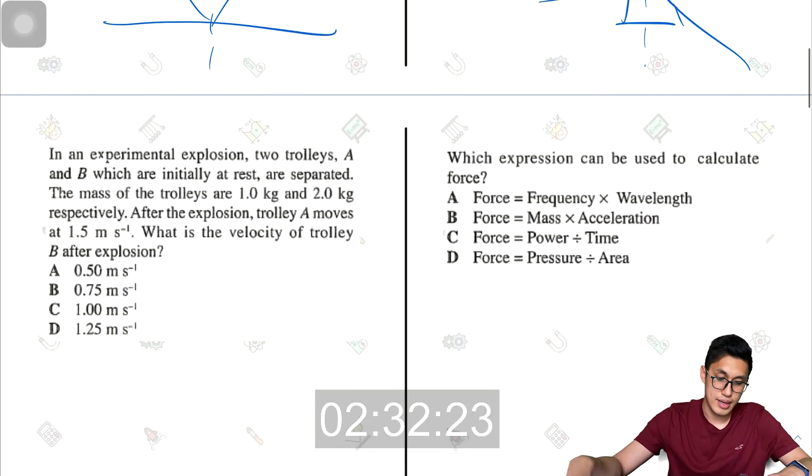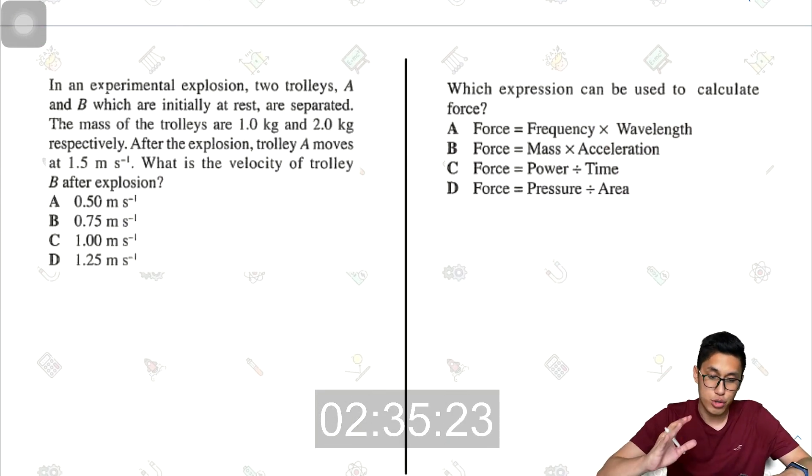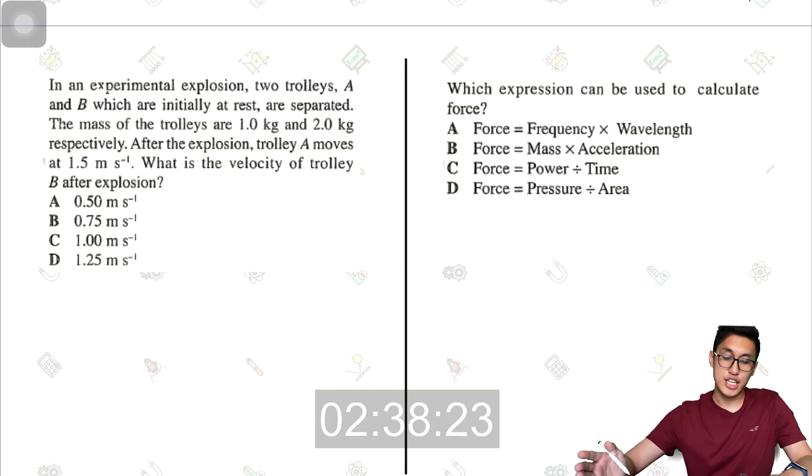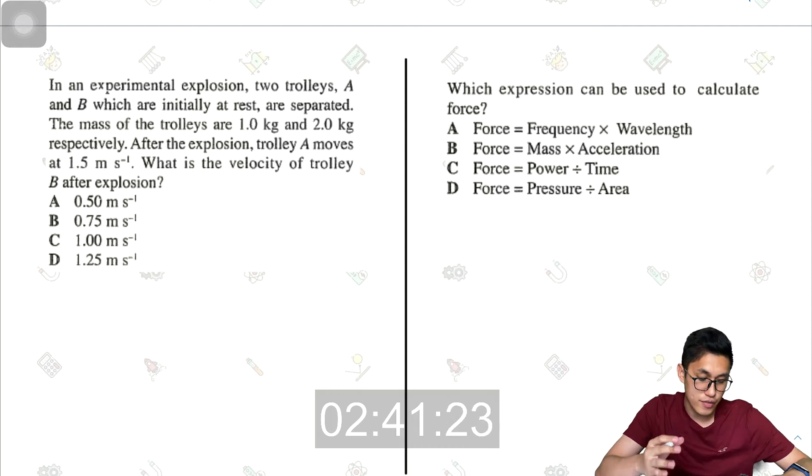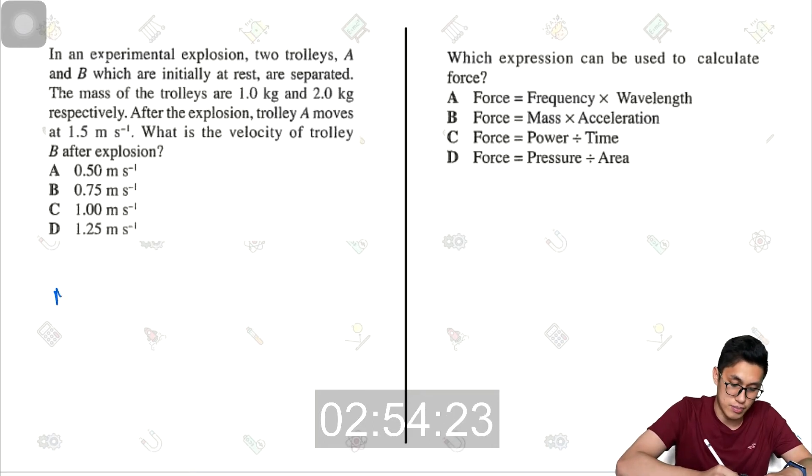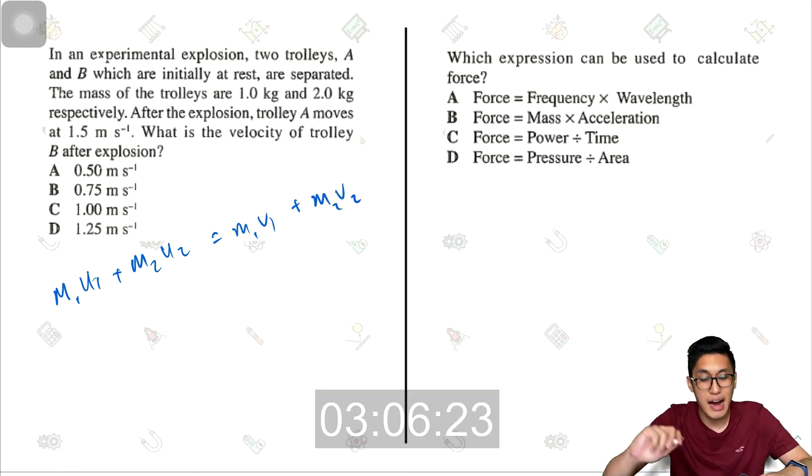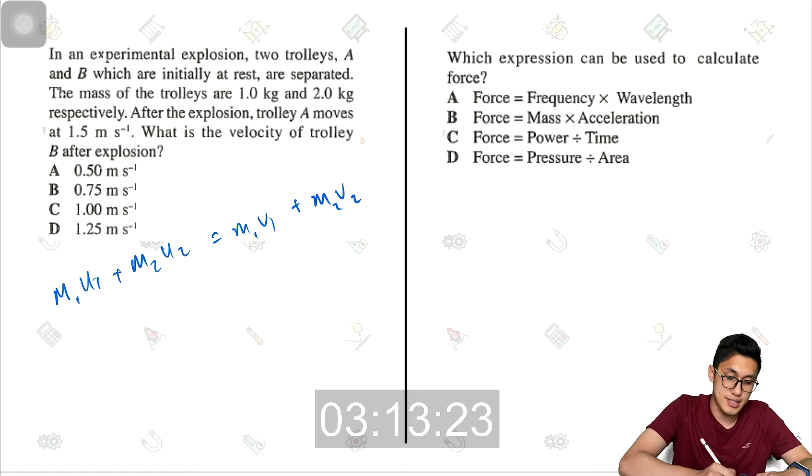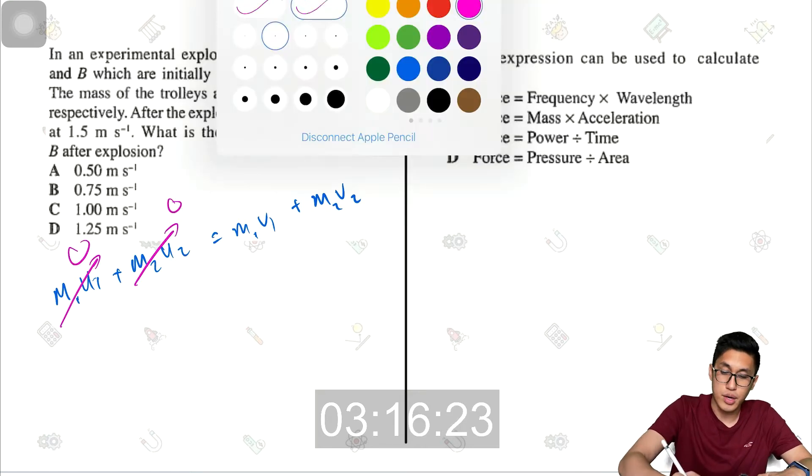The next one, in an experimental explosion, two trolleys A and B, which are initially at rest, are separated. The mass of the trolleys are 1 kg and 2 kg respectively. After the explosion, trolley A moves at 1.5 meters per second. What is the velocity of trolley B after the explosion? So this is a conservation of momentum. So I'll take M1U1 plus M2U2 equals M1V1 plus M2V2. The momentum before and the total momentum after must be the same.